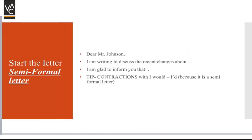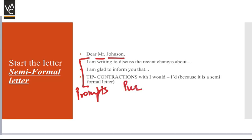For a semi-formal letter, it starts with Mr. and the second name. Here you can say, 'I am writing to discuss the recent changes about...' or 'I am glad to inform you' if it's positive news. You can use contractions once or twice because semi-formal is a mix of formal and informal. So instead of 'I would,' you can write 'I'd like to.'